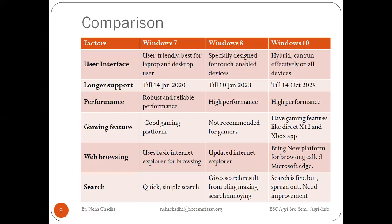Now if you compare Windows 7, Windows 8, and Windows 10 by the following parameters. First, user interface: Windows 7 is user-friendly, best for laptop and desktop use. Windows 8 is specially designed for touch-enabled devices — Windows 8 is the touch Windows. Windows 10 is hybrid and can run effectively on all devices.